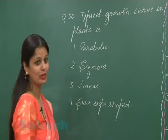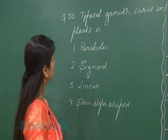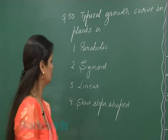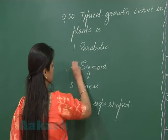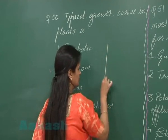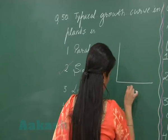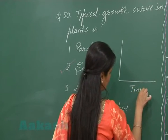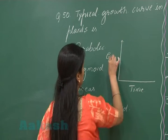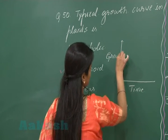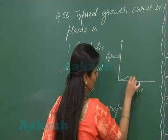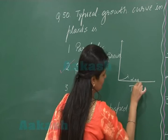Let's discuss question number 50: the typical growth curve in plants. The typical growth curve in most organisms is sigmoid. In the sigmoid curve, one axis represents time and the other represents growth. Initially, the growth is slow — this phase is called the lag phase.